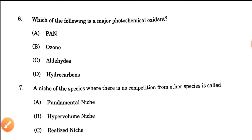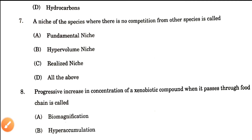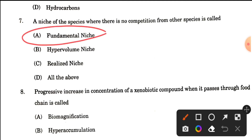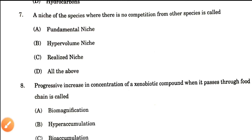Question number 7: A niche of a species where there is no competition from other species is called — fundamental niche, hyper volume niche, realized niche, or all of these? When there is no competition from other species, that type of niche is called the fundamental niche. So the answer is fundamental niche.